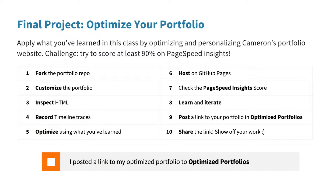Cameron's portfolio site needs a lot of work. If we run it through PageSpeed Insights, we see that it's scoring pretty low. As a final challenge, use what you've learned in this class to help optimize the site. Your goal is to improve the PageSpeed Insights score above a 90.